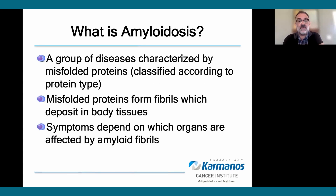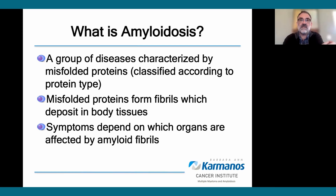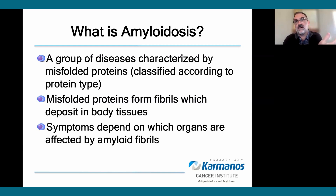Let's talk a little bit about amyloidosis. As many of you probably know, this is a group of various diseases characterized by misfolded proteins. The type of amyloidosis is classified according to the misfolded protein type. These misfolded proteins self-aggregate and form fibrils, which can then form extracellular deposits in body tissues. The symptoms patients have depend on which organs these deposits form in.